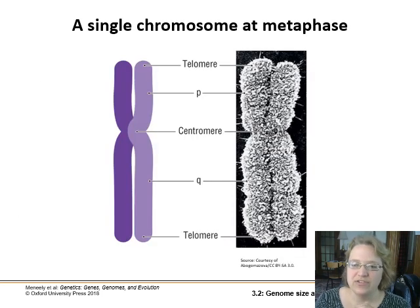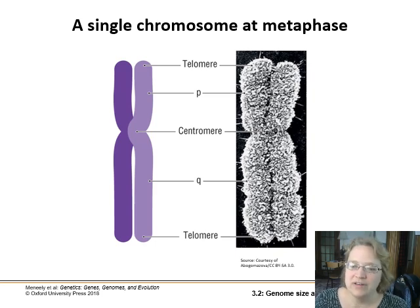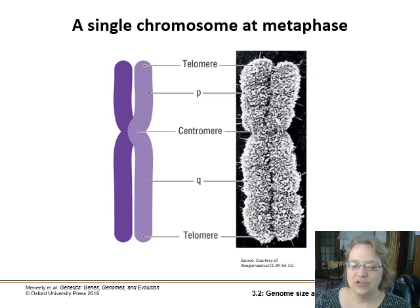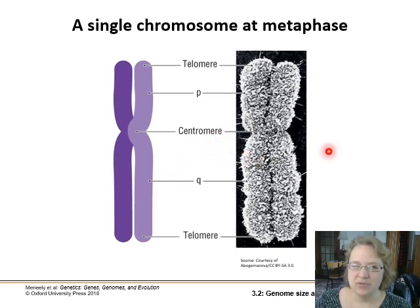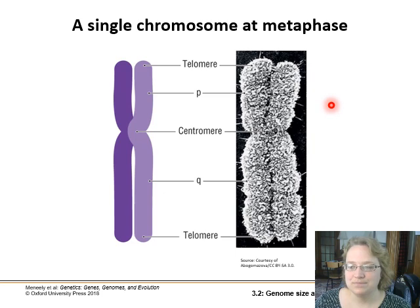Here's a single chromosome at metaphase — this is actually two separate strands of DNA conjoined at the centromere. In terms of chromosome terminology: the centromere is the middle part where they are touching; the telomeres are the ends of the chromosome; then we have the P arm, which is the short arm, and the Q arm, which is the long arm. Sometimes they're roughly the same size — that's just old terminology that's stuck around.